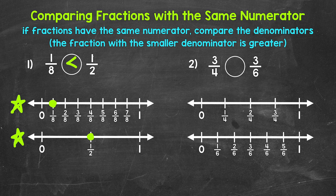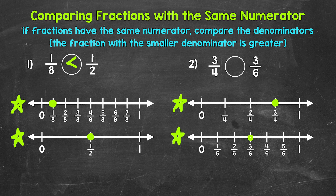We have the same numerator here — three — so we can just compare the denominators. We have three parts out of four, and three parts out of six. One of the wholes has been divided into four equal parts, and the other has been divided into six equal parts. The whole divided into four equal parts will have bigger parts than the whole divided into six. So three fourths is greater — three fourths represents more of the whole, and it will be further right on a number line. Let's show that with these number lines. We'll mark three fourths on this number line — three fourths is right here. We'll mark three sixths on this number line — three sixths is right here. We can see that three fourths is greater; three fourths is further right on a number line. So our comparison symbol goes like this, and we can read this comparison from left to right as three fourths is greater than three sixths.